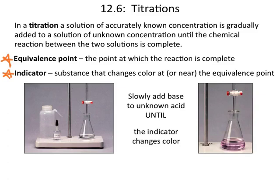The picture here represents this process. You have some unknown down here in your flask, and then in your burette up here you have another compound of an accurately known concentration. You slowly and carefully add the solution from the burette into the flask below until you reach the equivalence point. In this case the equivalence point comes about when the solution turns pink, because there's an indicator in here that turns pink once you hit the equivalence point of this acid-base titration.